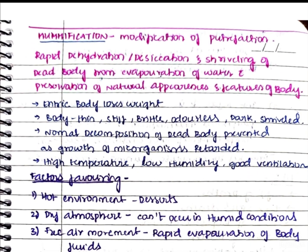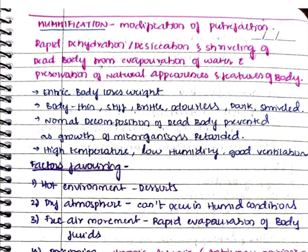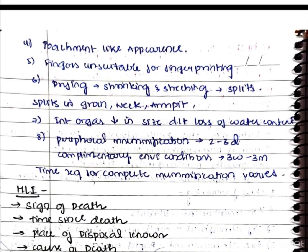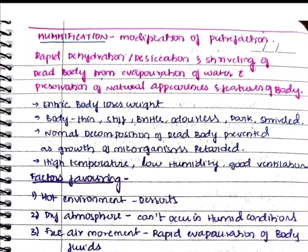To summarize: mummification is a modification of putrefaction and revolves around evaporation of water. The body appears thin, stiff, brittle, odorless, dark, and shriveled — odorless because decomposition is prevented due to retarded microbial growth. Favoring conditions include high temperature, dry atmosphere, low humidity, free air movement, poisoning like antimony or arsenic, and contact with absorbing media. Drying, shrinking, and stretching can cause splits misinterpreted as injuries, and organs decrease in size due to water loss.